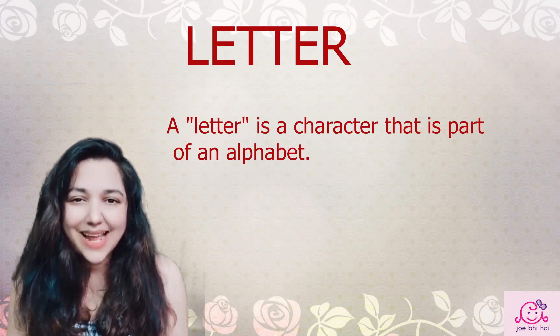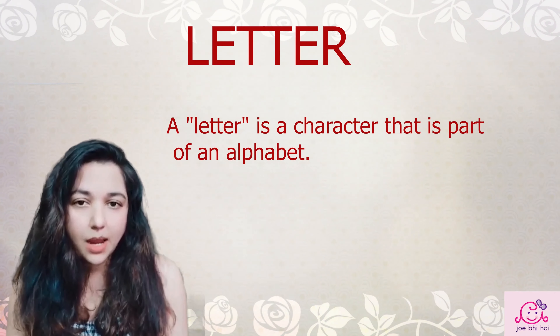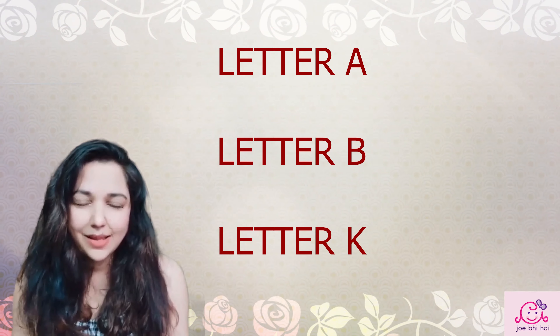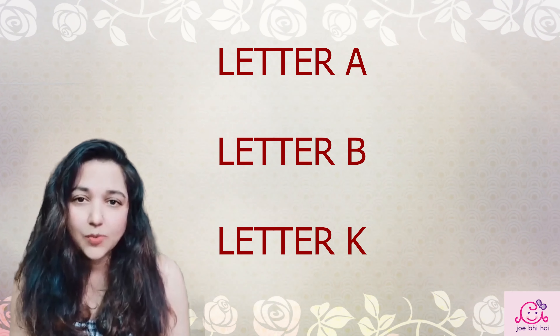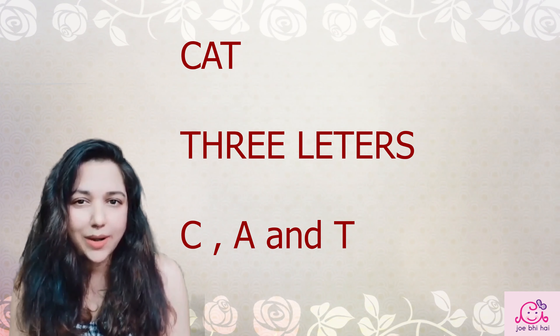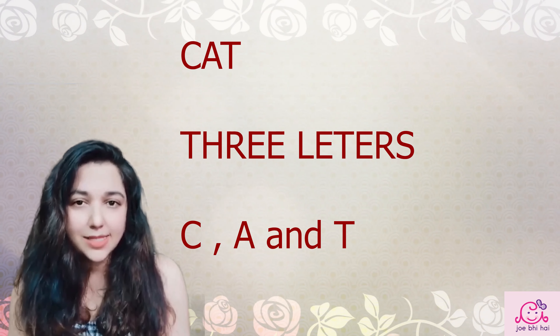Now let's talk about letters. A letter is a part or single unit of an alphabet, like letter A, letter B, or letter K. Suppose we have a word cat. How many letters are there in this word? There are three letters — C, A, and T.